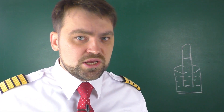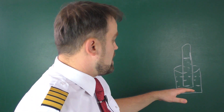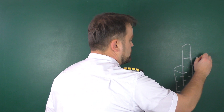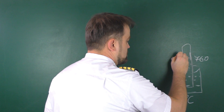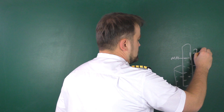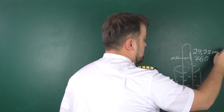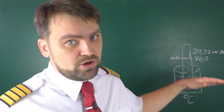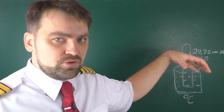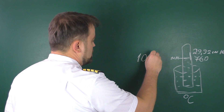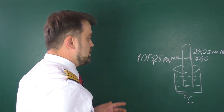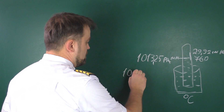You may have heard the term standard pressure. If we take a barometer and measure pressure at sea level under zero degrees Celsius with standard air density, the mercury will rise to 760 millimeters. In imperial units that is 29.92 inches of mercury. That mercury column creates a pressure of 101,325 Pascals.